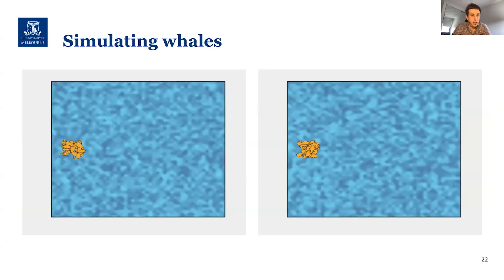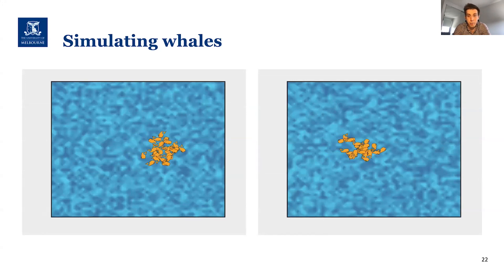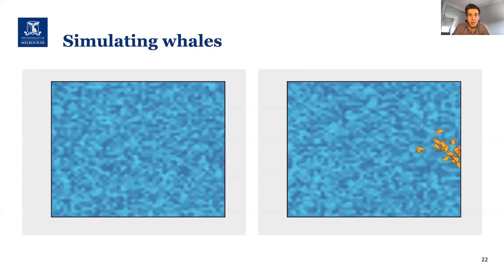Here are two simulation videos in a simple test case. We put whales in a simple environment with a constant level of background information — they just want to travel from left to right. The only difference is that the ones on the left can communicate with each other while the ones on the right migrate individually. It's much more efficient to move as part of a group because you're less uncertain about where to go. The left group moves in a more straight-line fashion, gets to the far side earlier, and the population tends to stick together. The individuals on the right are more all over the place. This is something you couldn't do by experimenting on whales — short of putting earmuffs on them.